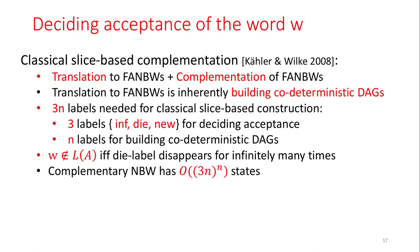We prove that the complementary Büchi Automaton has 4^n states. For the general slice-based complementation, we can view it as first translating a Büchi Automaton to a finitely ambiguous Büchi Automaton and then complementing it. The translation essentially builds codeterministic DAGs, so to decide acceptance we again need three labels — inf, die, and new — plus n labels for building the codeterministic DAGs, giving 3n labels in total. The complementary Büchi Automaton has superexponential blowup in the states.